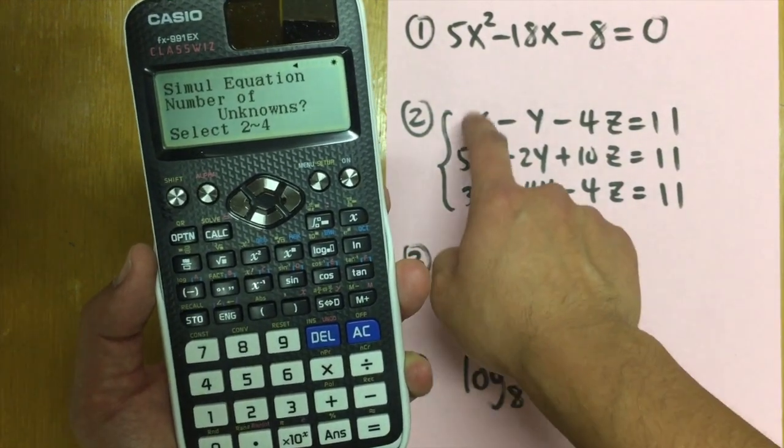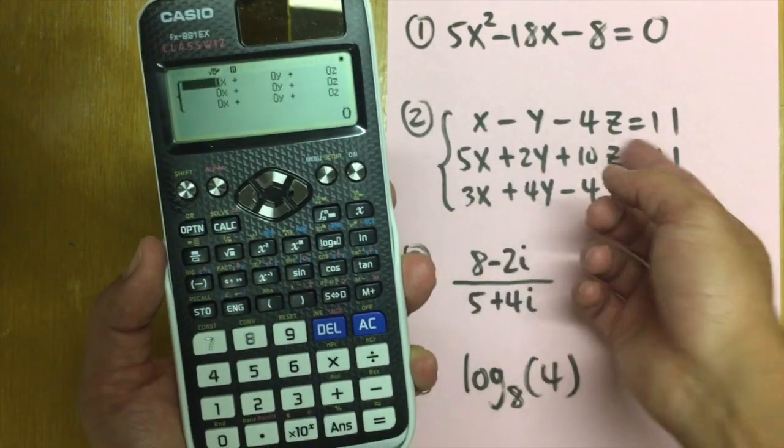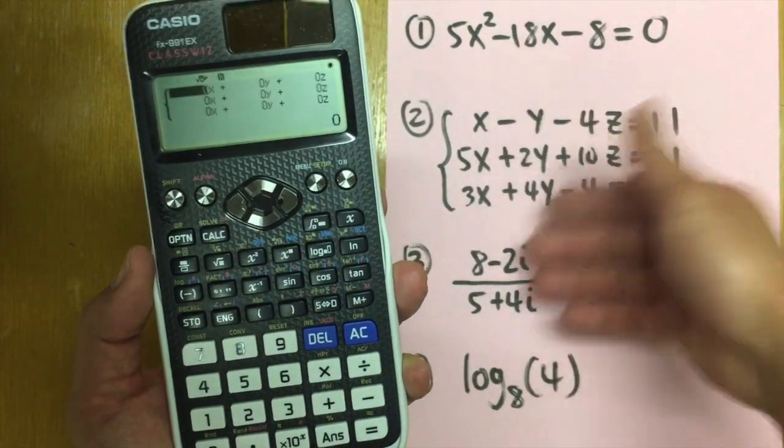This is a simultaneous equation, which is number one right here. How many unknowns do we have? Well, we have x, y, z. We have three of them. So press three. And now let's enter all the coefficients, all the numbers. Be sure everything is lined up.